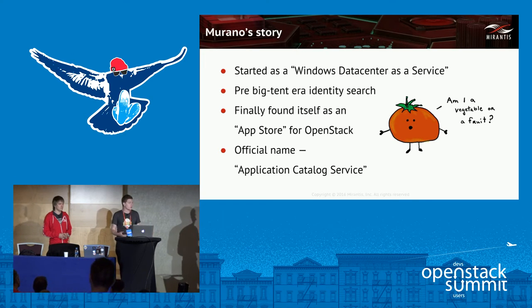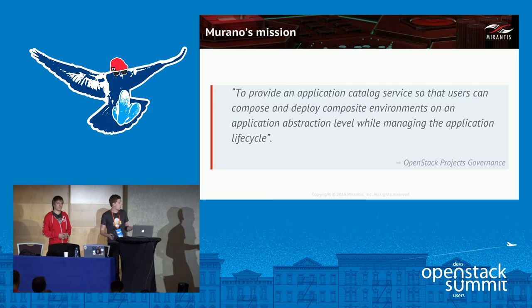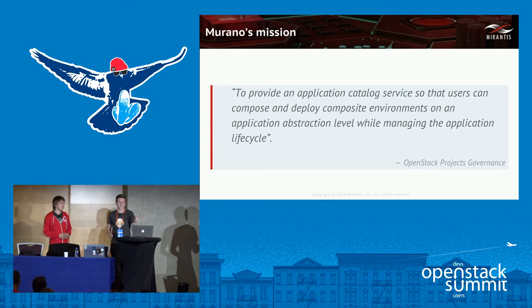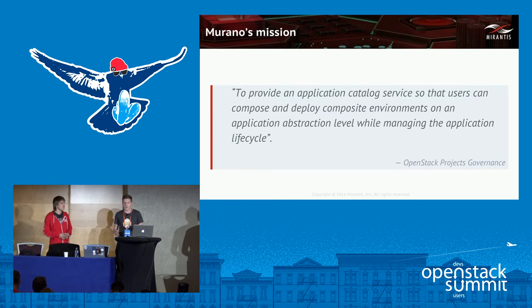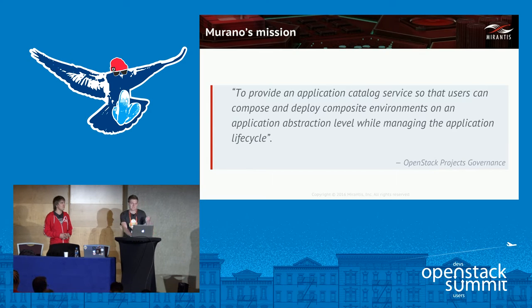The official name is the Application Catalog Service. Once the BigTent was a thing, Murano applied and was one of the first BigTent projects with this kind of mission. The mission: to provide an Application Catalog Service so that users can compose and deploy composite environments on an application abstraction level. That's pretty much our mission since the beginning of BigTent.